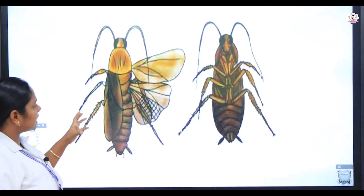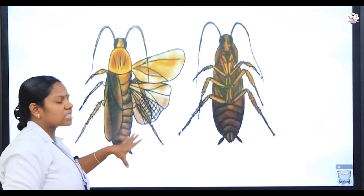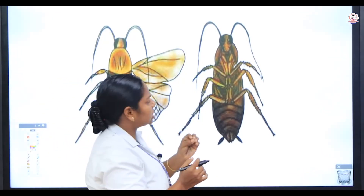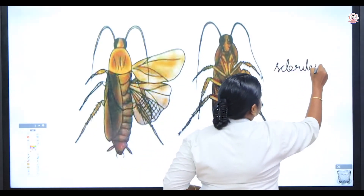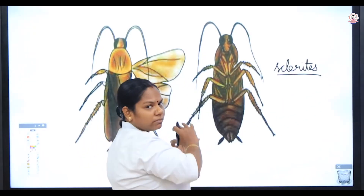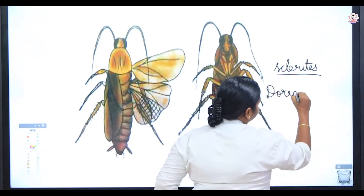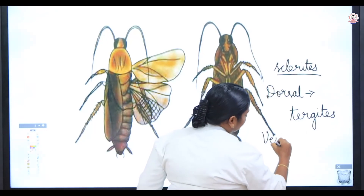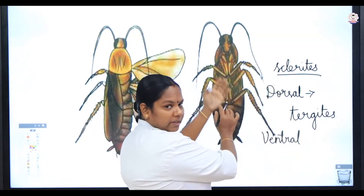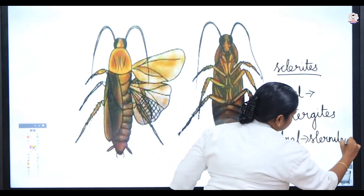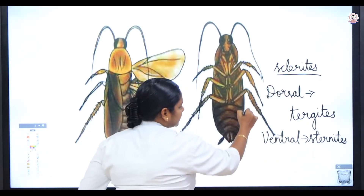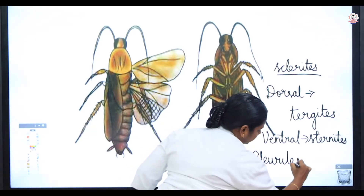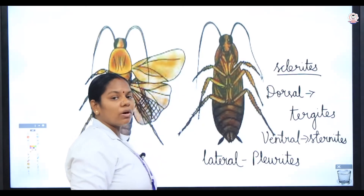Before that, the body of the cockroach is divisible into ten segments and the exoskeleton is covered by a thick structure called sclerites. If the sclerite is present on the dorsal side it is called tergites; if present on the ventral side it is called sternites; and if present on the lateral sides it is called pleurites. All together — tergites, sternites, and pleurites — are called sclerites.